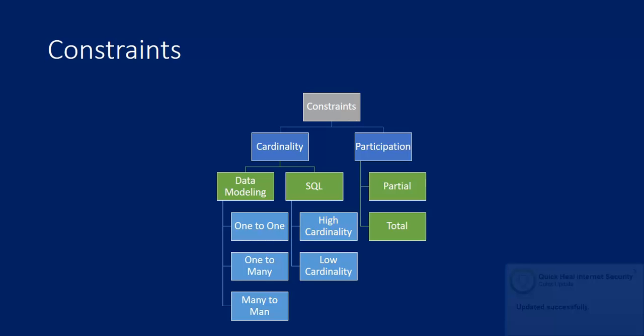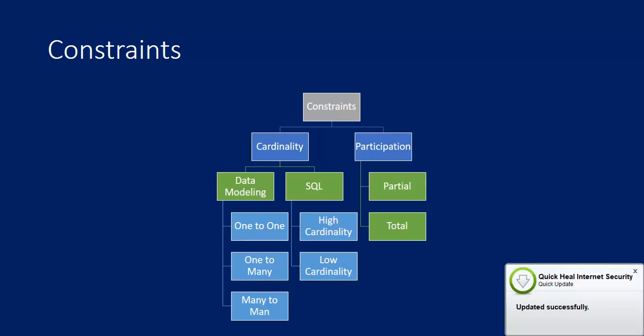There are two kinds of constraints: cardinality constraints and participation constraints. Within cardinality constraints, there are two aspects: a data modeling aspect and an SQL aspect. In data modeling, there is one-to-one, one-to-many, and many-to-one cardinality. Participation can be partial participation or total participation.